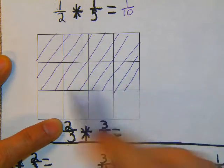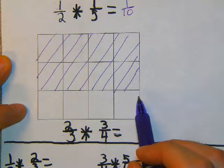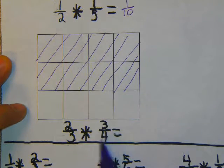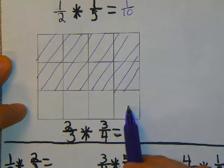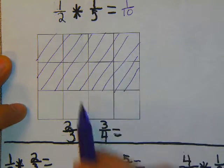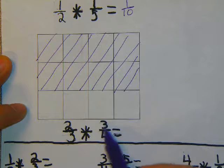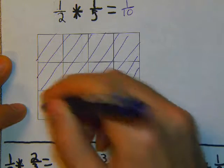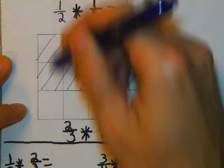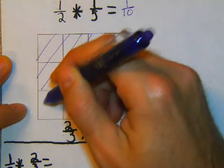So I have 2 thirds of my box shaded in. Now I'm going to look at my 3 fourths, and I'm going to see that I have 1, 2, 3, 4. Now my box is cut vertically for my fourths, so I need to shade in 3 of those fourths. So once again, I'm going to shade the opposite way.